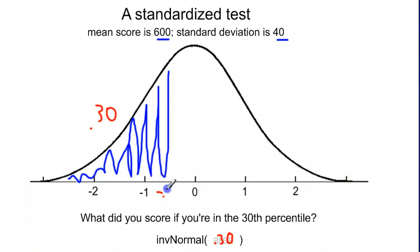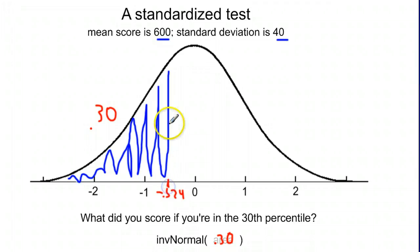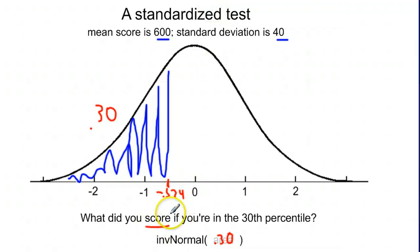Negative 0.524 is the z-score that corresponds to the 30th percentile score. But it asks what score you got, not what z-score. So it wants to know the actual score on the test, and I have to use my z-score to figure out what that actually corresponds to.